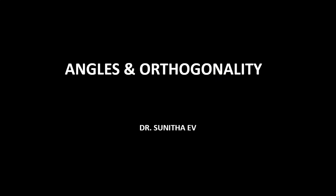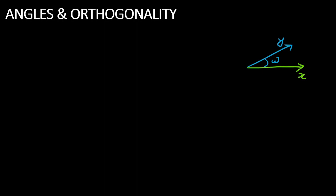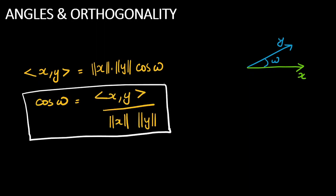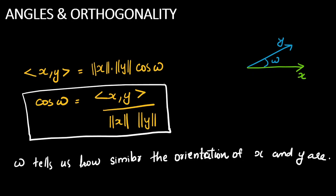Welcome to the session on angles and orthogonality — the angle between vectors and the orthogonality of vectors. Assume two vectors x and y, and the angle between them is omega. The inner product of x and y is equal to the norm of x times the norm of y times cosine omega. From that we can derive that cosine omega equals the inner product of x and y divided by the norm of x times the norm of y. So omega tells us how similar the orientation of x and y are.